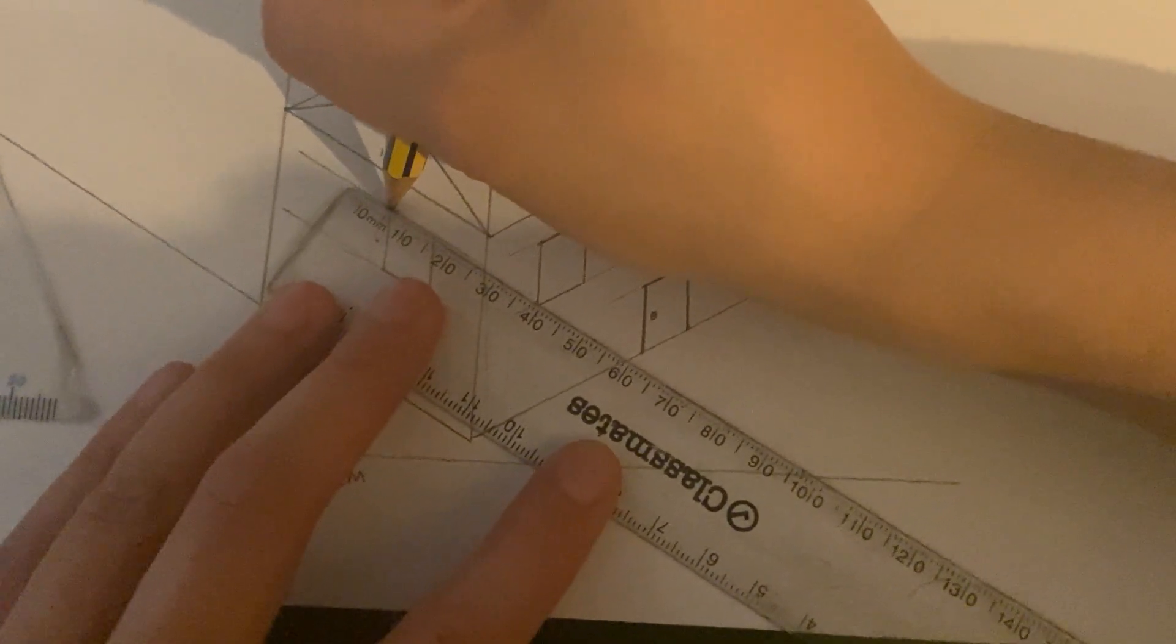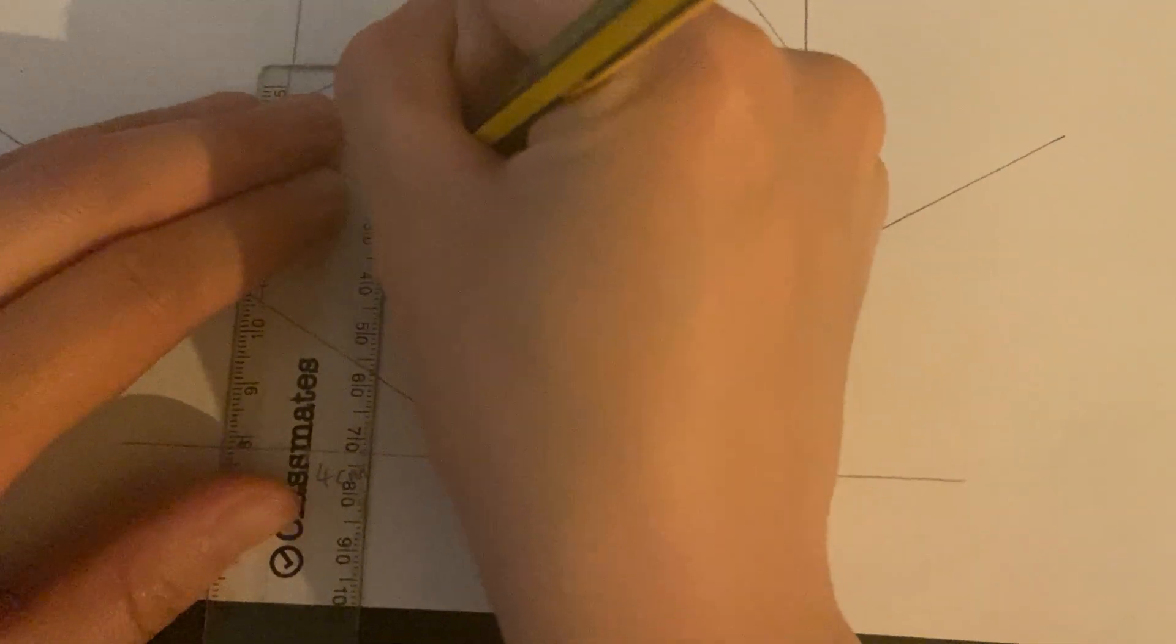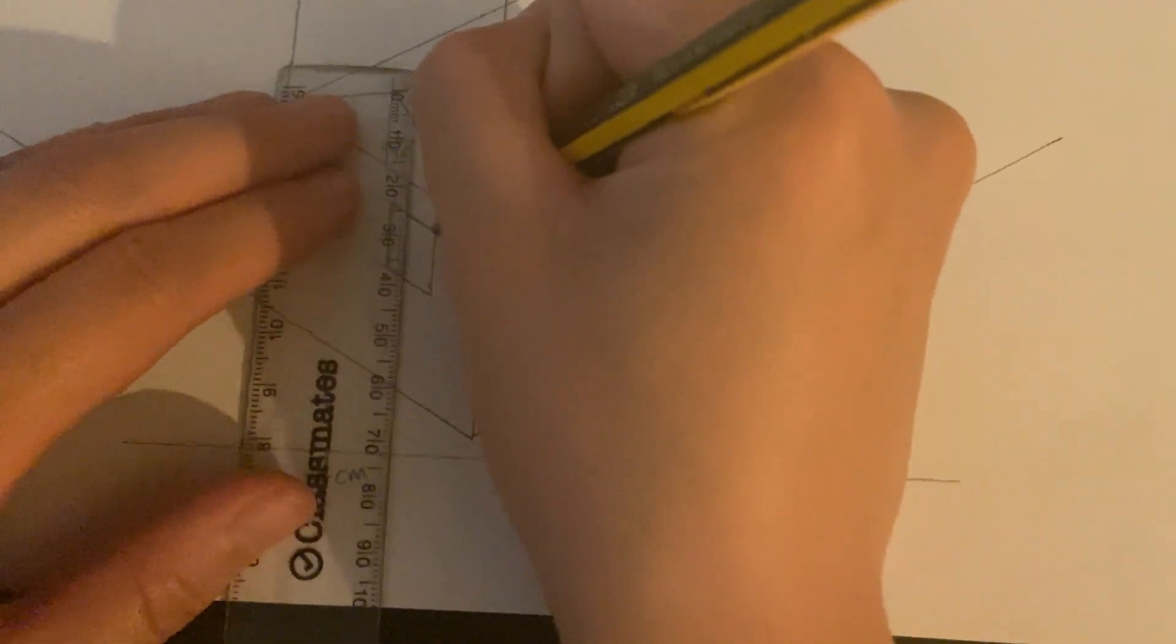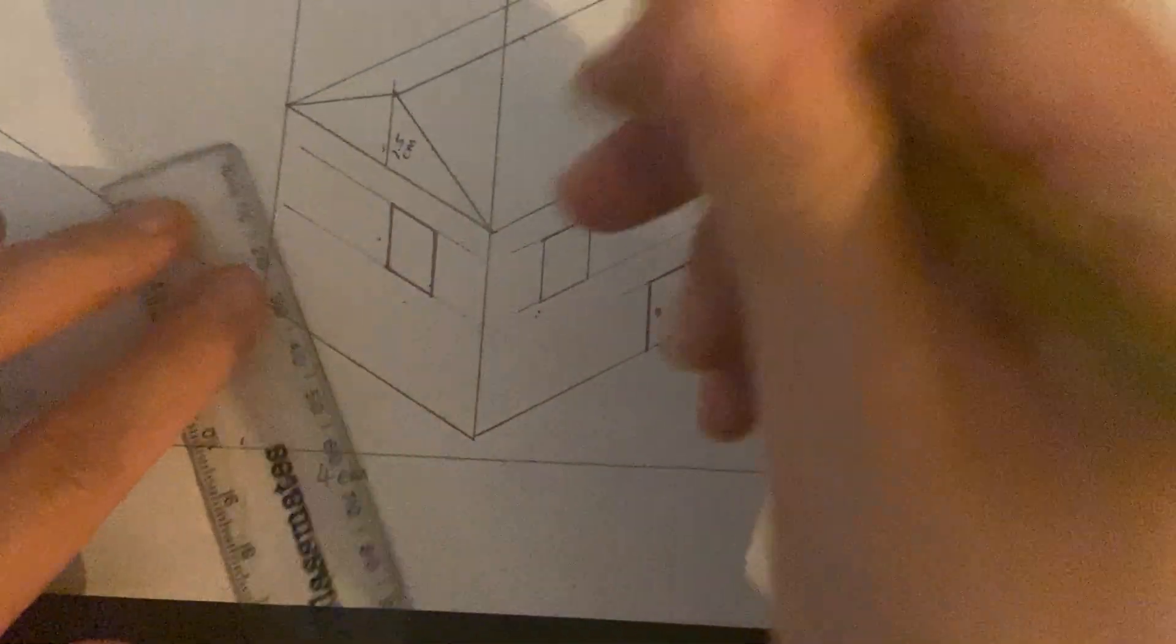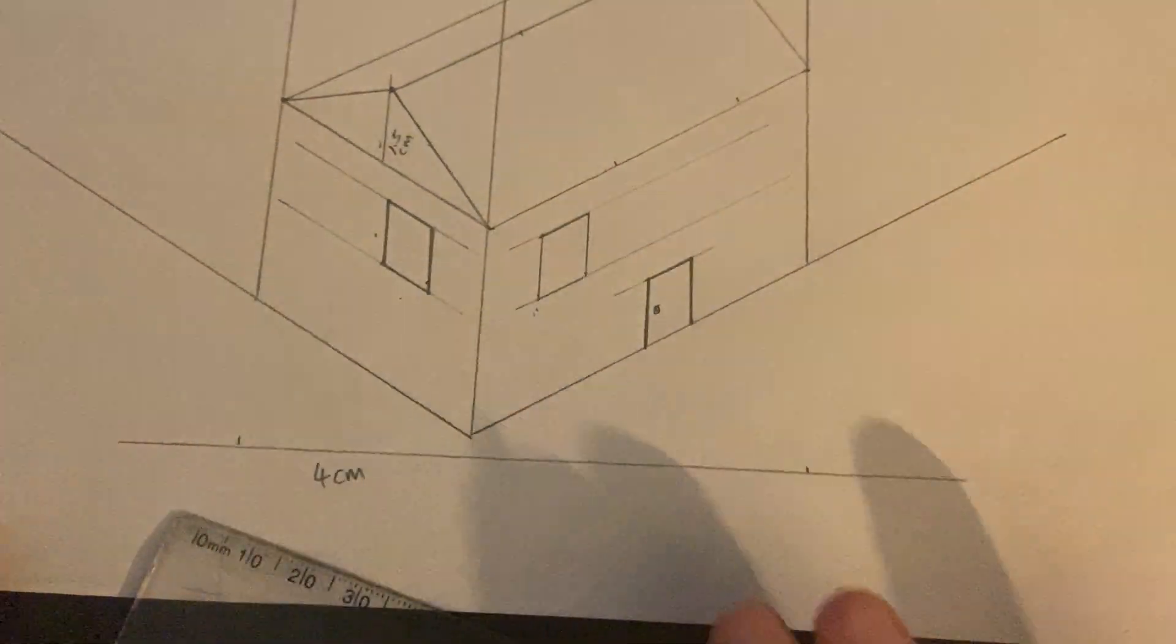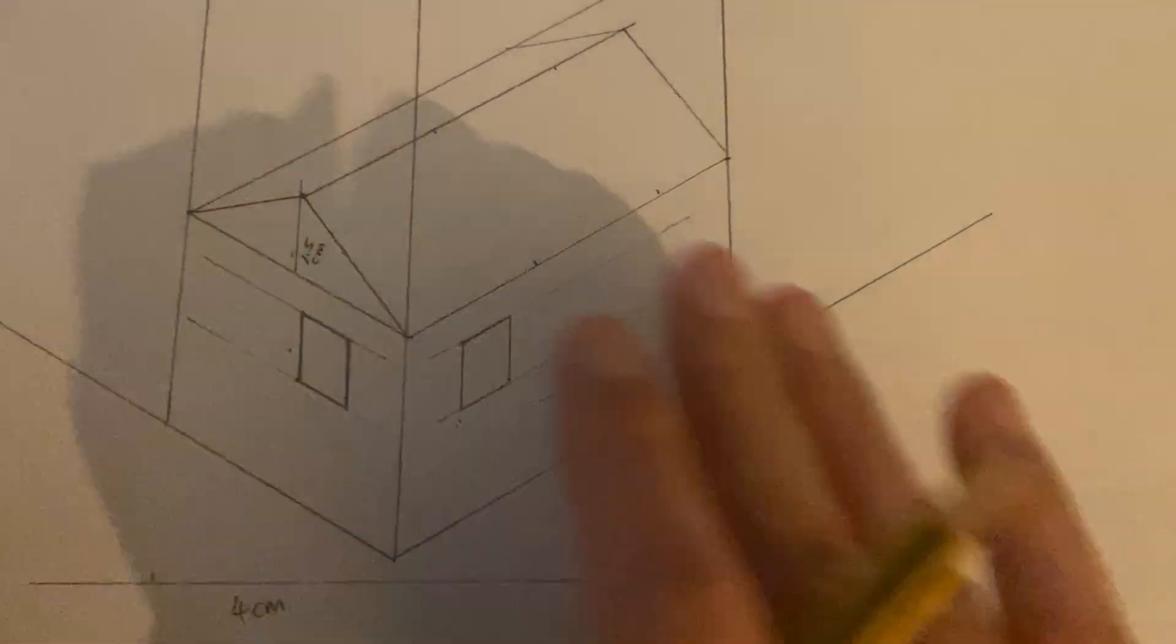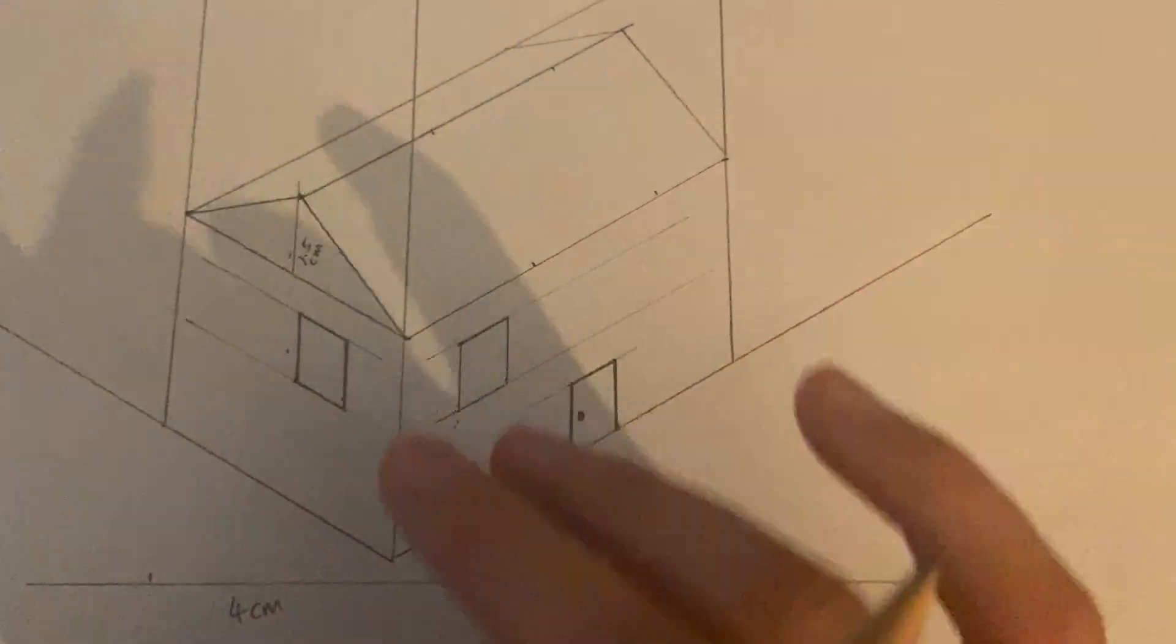And then if you're happy with the shape and the position and size, you would then go over the window outline and just press hard. You never really need to use a rubber. Once you press hard to show those outlines of those features, they tend to stand out in the end and all these construction lines wouldn't really be confusing afterwards. And that's it really, so you just carry on following those particular steps that I've shown you.